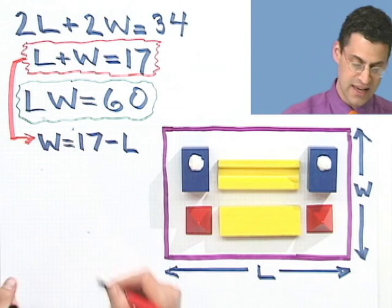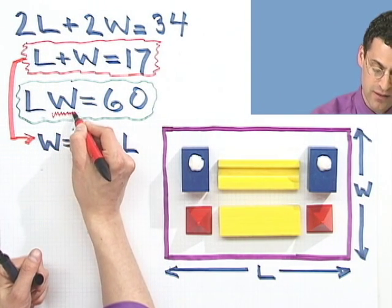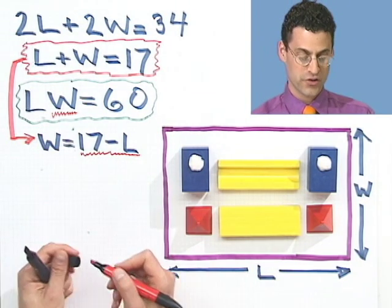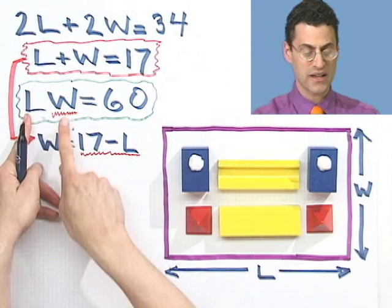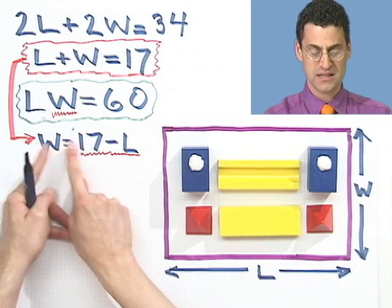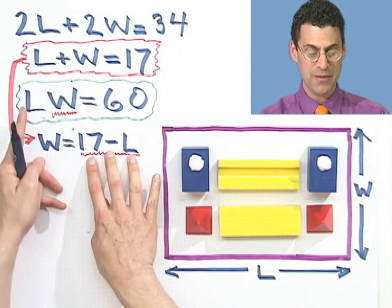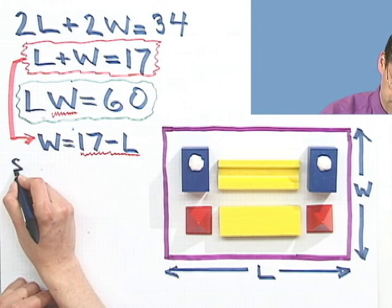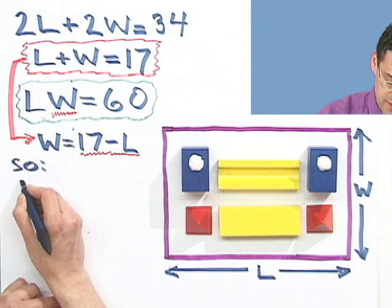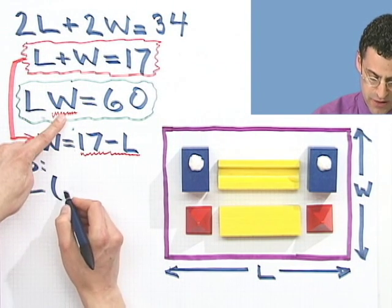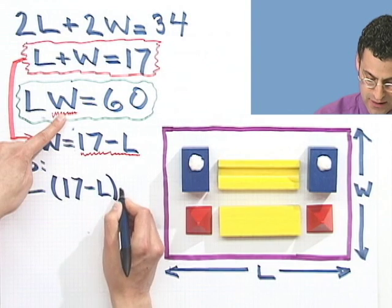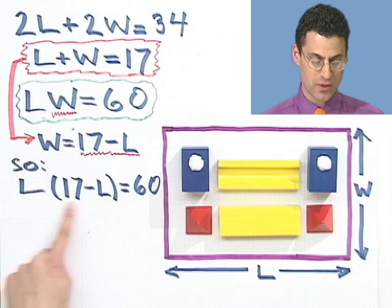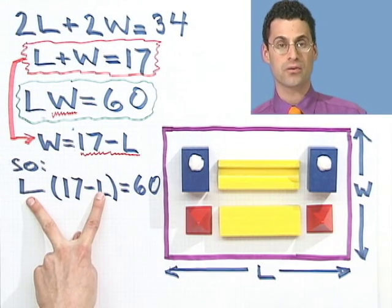But the beauty of that is that now in place of this W right here, I can insert its twin, which is 17 minus L. So that's something that has the same unknown thing I already have. And if I do that, what I would see is I would see the L times W, which I'm now going to write as 17 minus L equals 60.